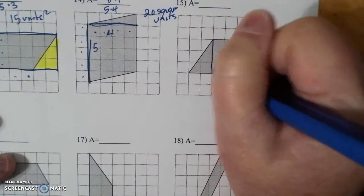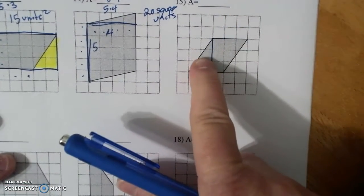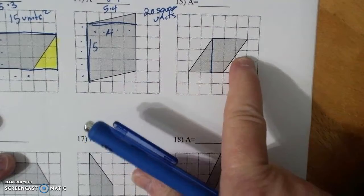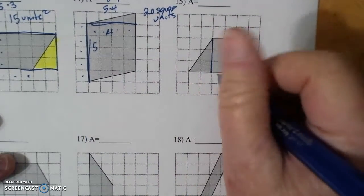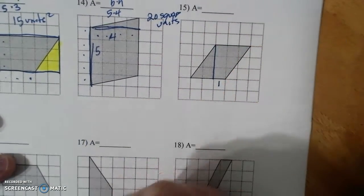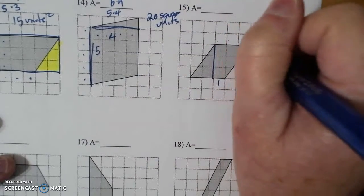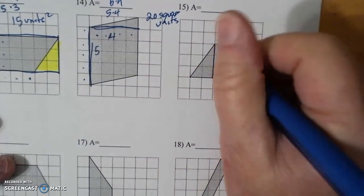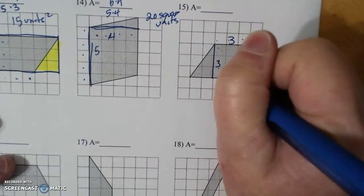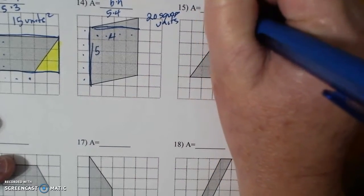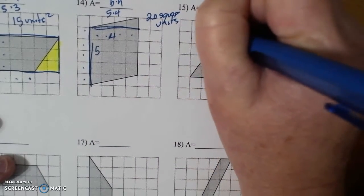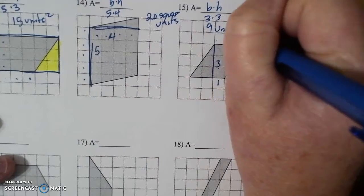So here, pretend you pick this piece up, cut it off, stick it over here. It becomes a rectangle. Your base is not 1. Your base is 3, because this comes over here. And your height is 3. And so it's base times height, which is 3 times 3, which is 9 units squared.